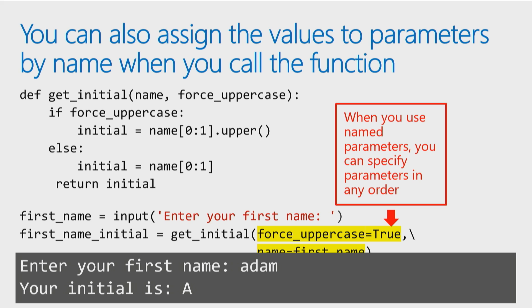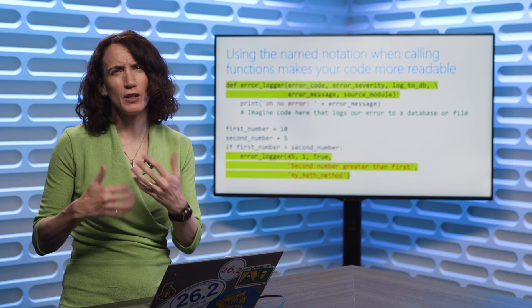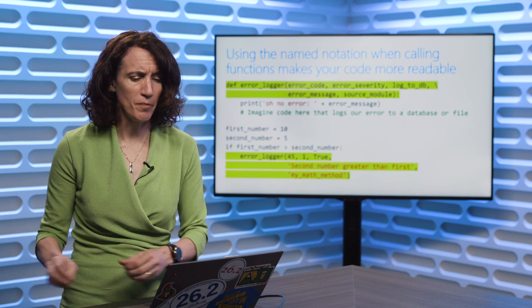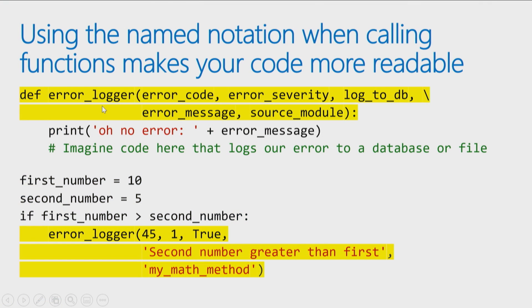What I love about doing it this way, it all executes the same, is how much easier it makes your code to read. I have done a lot of systems where we had to log errors when things went wrong in our code, and you would sometimes see code like this. Somebody creates a function that we pass the error message, and the error code, and what time the error occurred, and all these parameters.